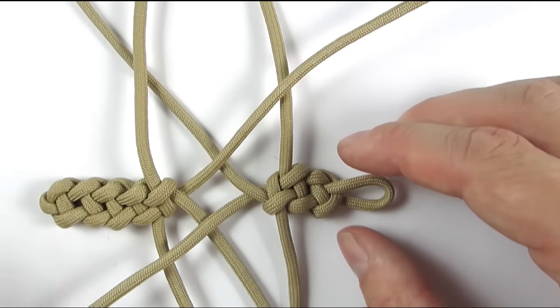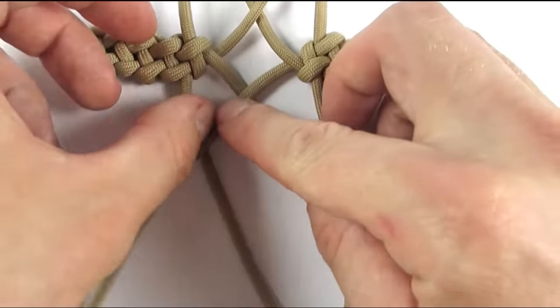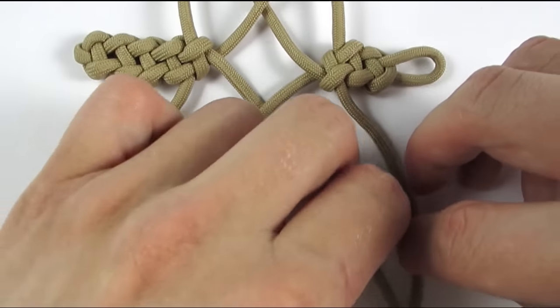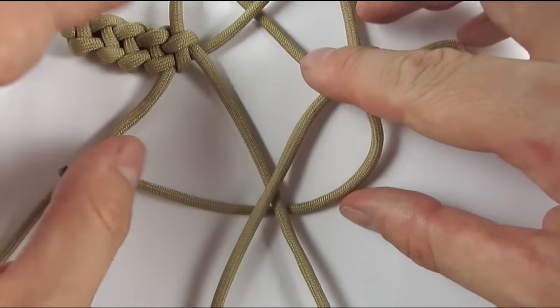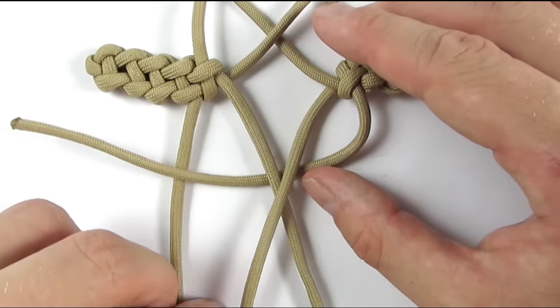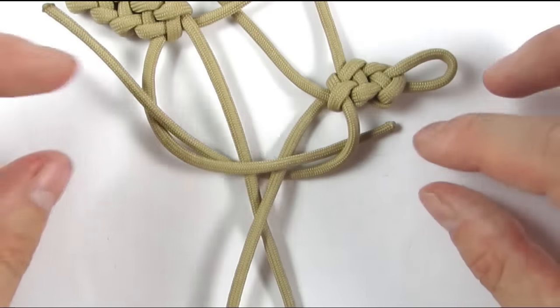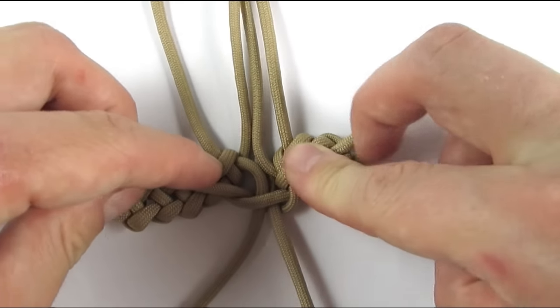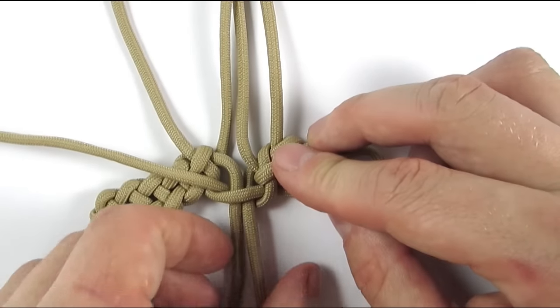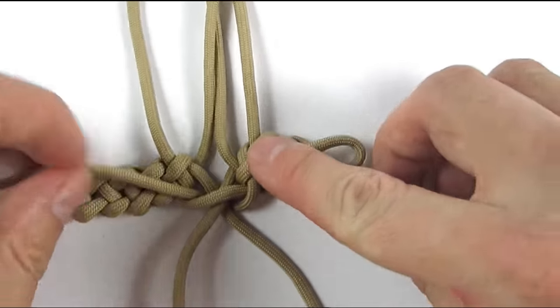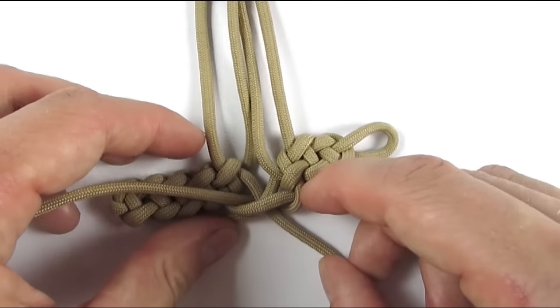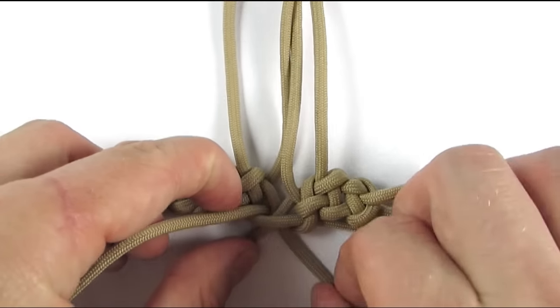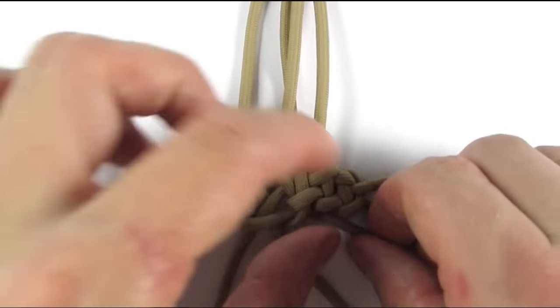And then we're going to start with a cobra knot just like before. But we're going to also keep our middle two cords crossed. So first tie a cobra knot. And this is a bit messy because the cords move around a bit, but it will get better after you tighten up your first knot. Make sure that your middle cords are crossed.